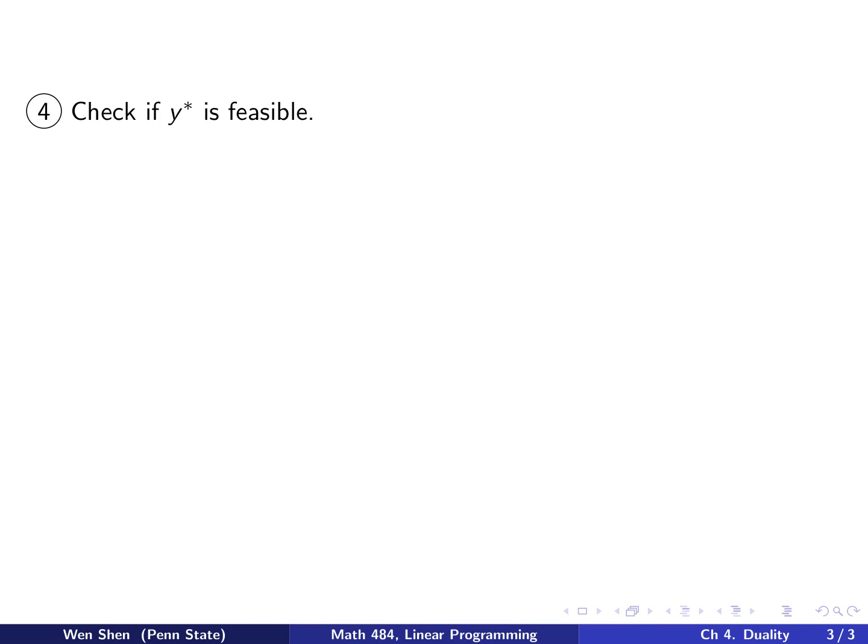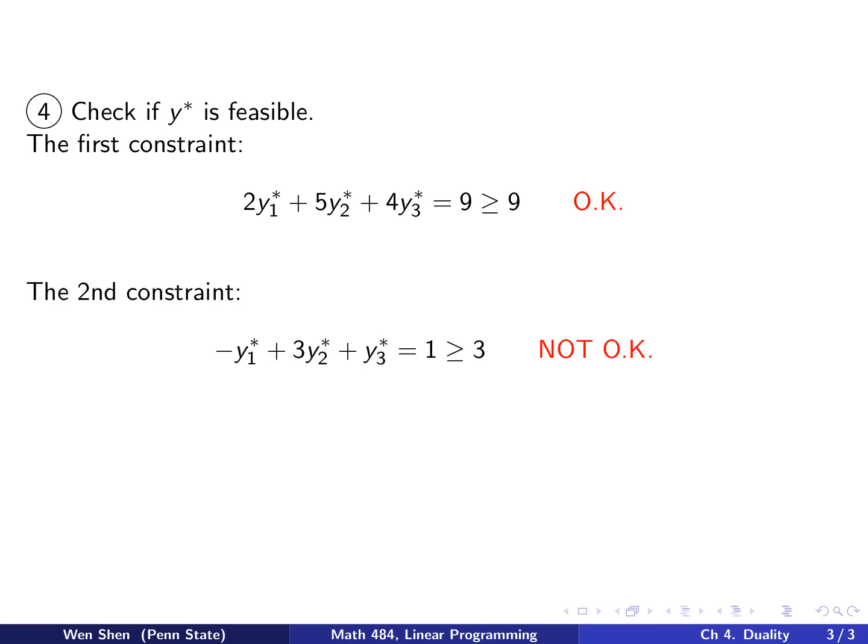We're not done yet, right? Because we only have a candidate y star, which satisfies the slackness theorem, but we still need to check if it's feasible. So that's step four. Let's go through the constraints one by one. Let's look at the first constraint. We plug in the y value on the left-hand side, and then it's nine. The constraint wants it to be bigger than or equal to nine, so that's okay.